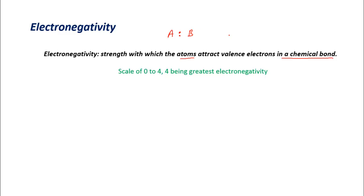For example in HCl, chlorine is more electronegative, so the electron pair is pulled closer to the chlorine than to the hydrogen. We measure electronegativity on a scale of 0 to 4 called the Pauling scale, where 4 represents the greatest electronegativity.